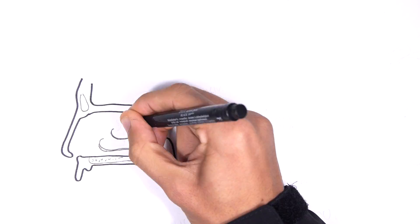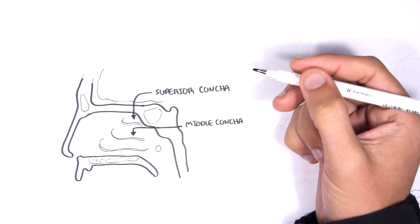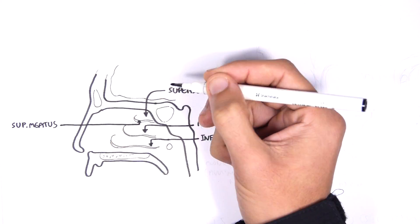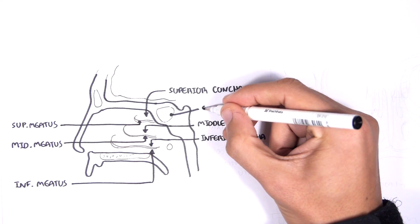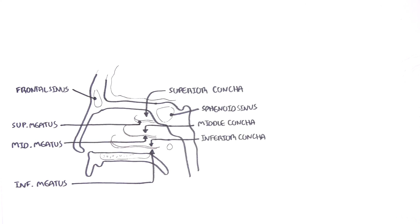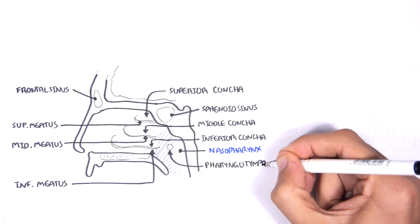Let's recap the anatomy. Here is the superior concha, middle concha, inferior concha. And behind each concha, you have the meatus. So here you have the superior meatus, middle meatus, and inferior meatus. Here is your sphenoid sinus and frontal sinus. This is your nasopharynx. And remember, the pharyngotympanic tube drains here from the middle ear.